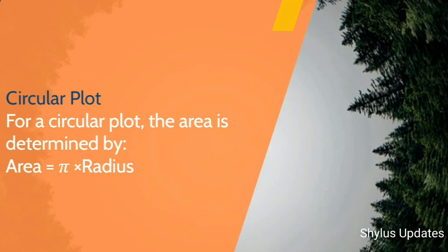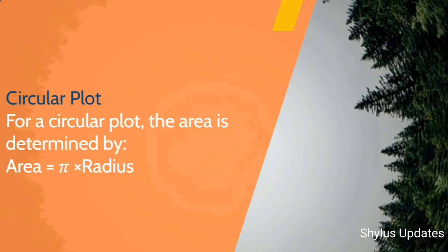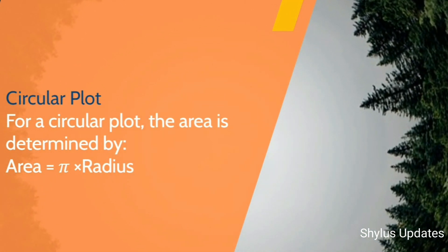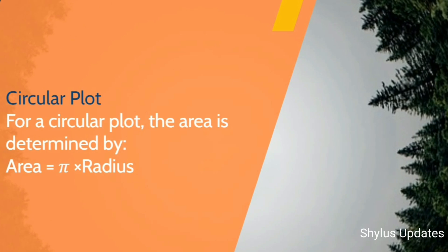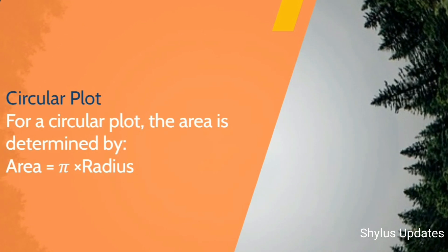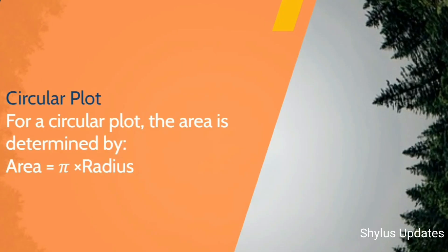Circular plot: for a circular plot, the area is determined by Area equals pi times radius squared.